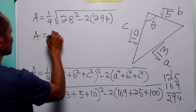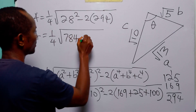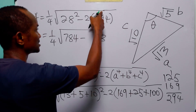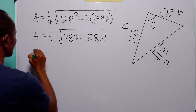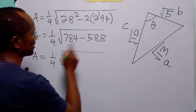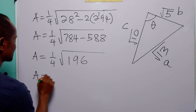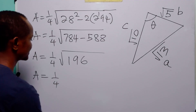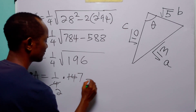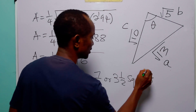Continuing: Area = (1/4)√(784 − 588) = (1/4)√196. The square root of 196 is 14, so Area = 14/4 = 7/2. Therefore the area is 3.5 square units, confirming our first result.